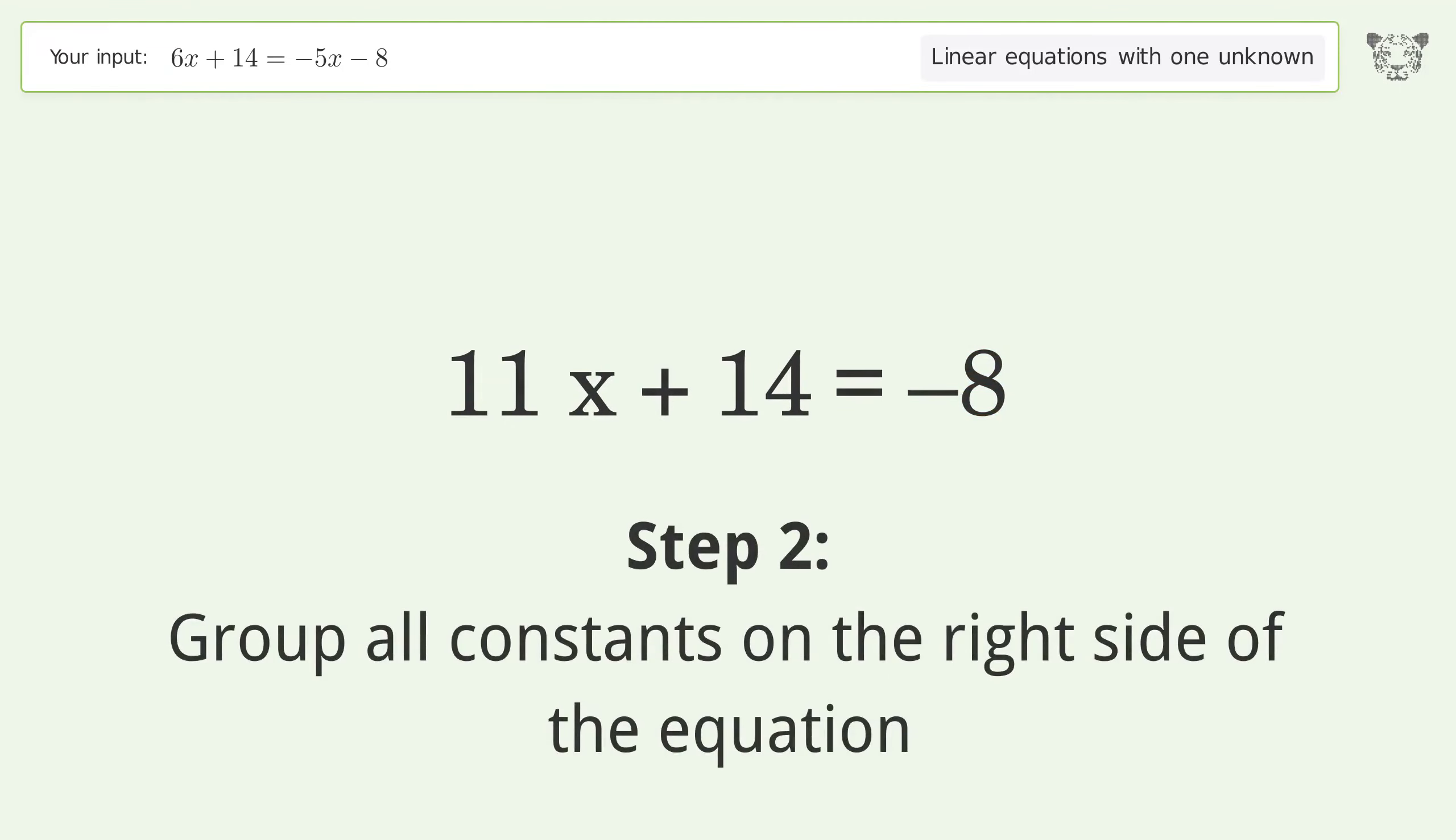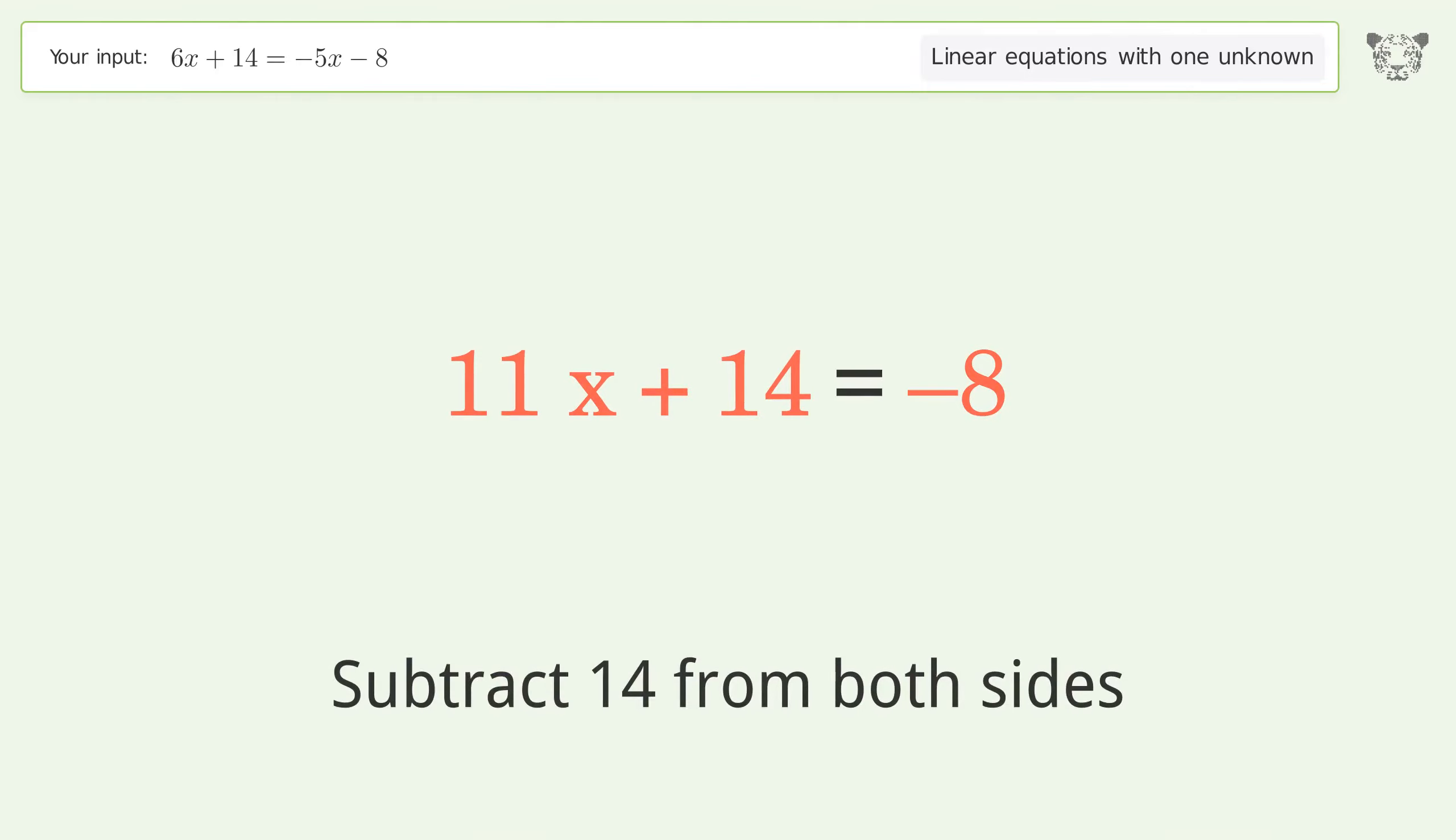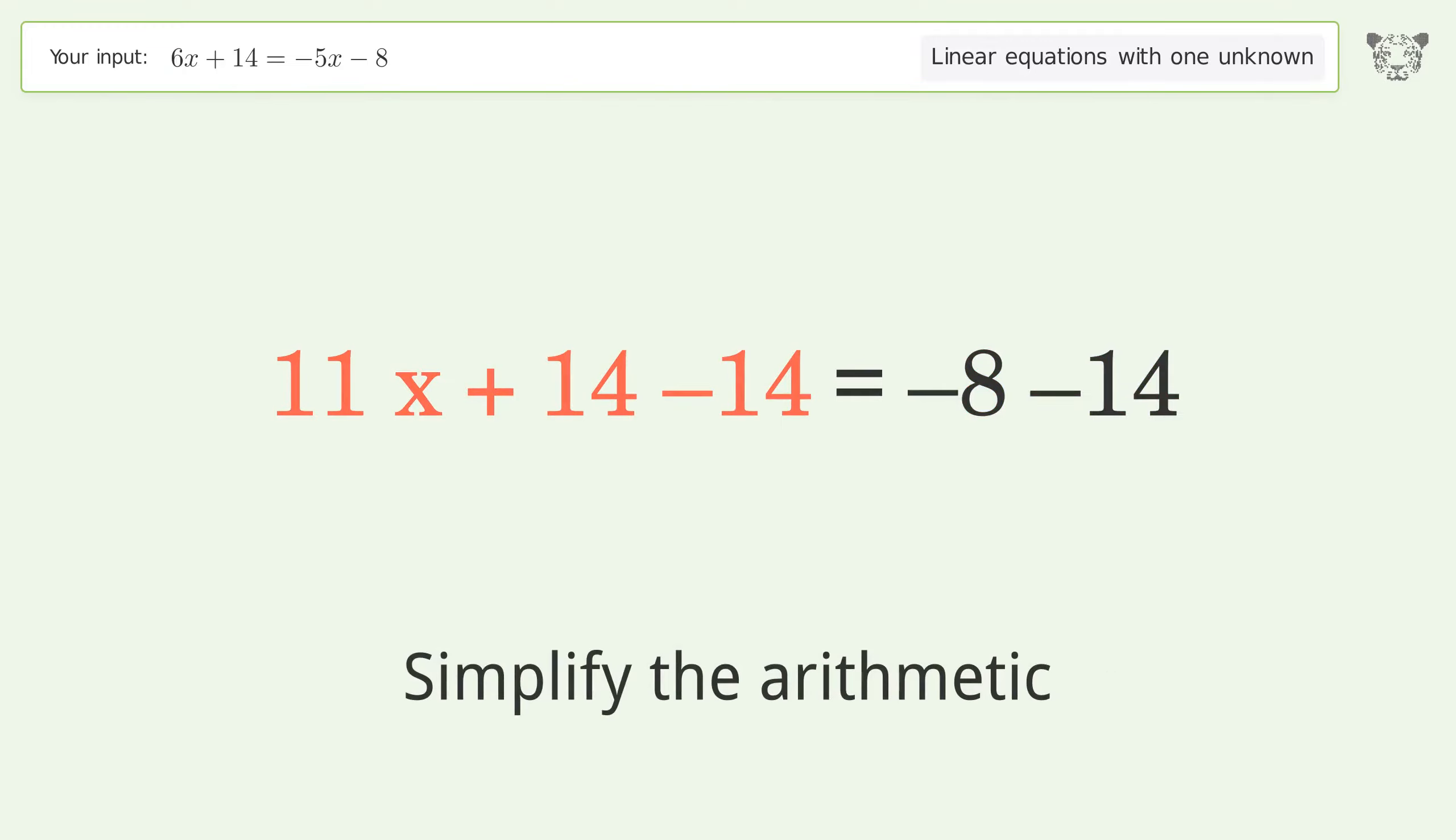Group all constants on the right side of the equation. Subtract 14 from both sides. Simplify the arithmetic.